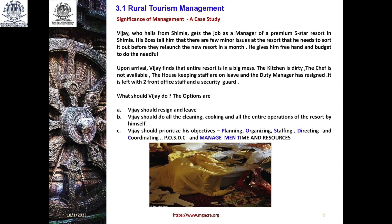So what should Vijay do? Two options: option A — Vijay should resign and leave; or option B — Vijay should do all the cleaning, cooking, and entire operations of the resort by himself. The answer is Vijay should prioritize his objectives through planning, organizing, staffing, directing, coordinating, and controlling. These are the five important principles a manager should follow — that is what management means: managing time and resources through these functions.